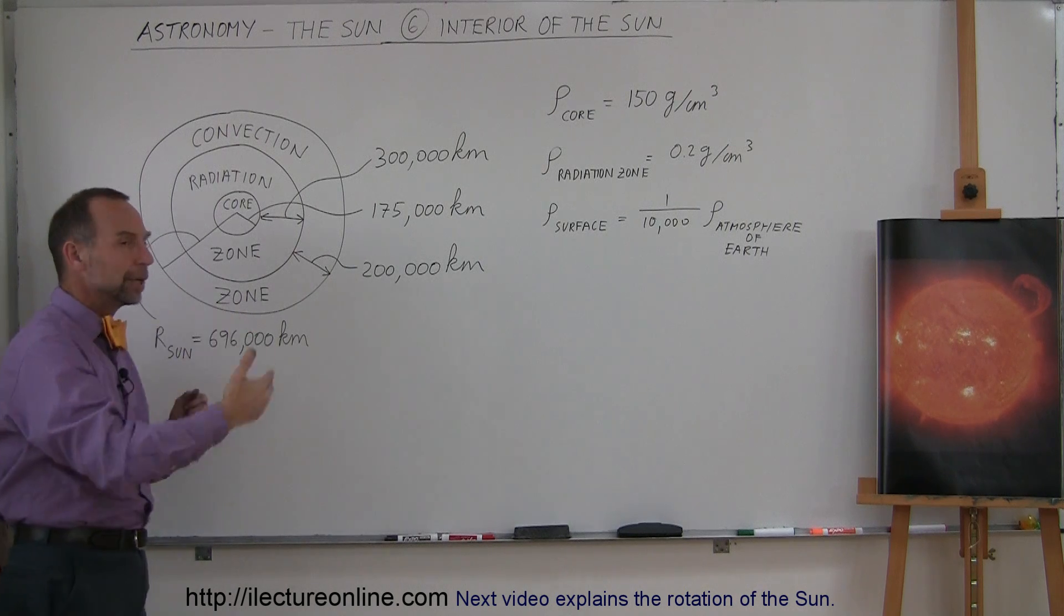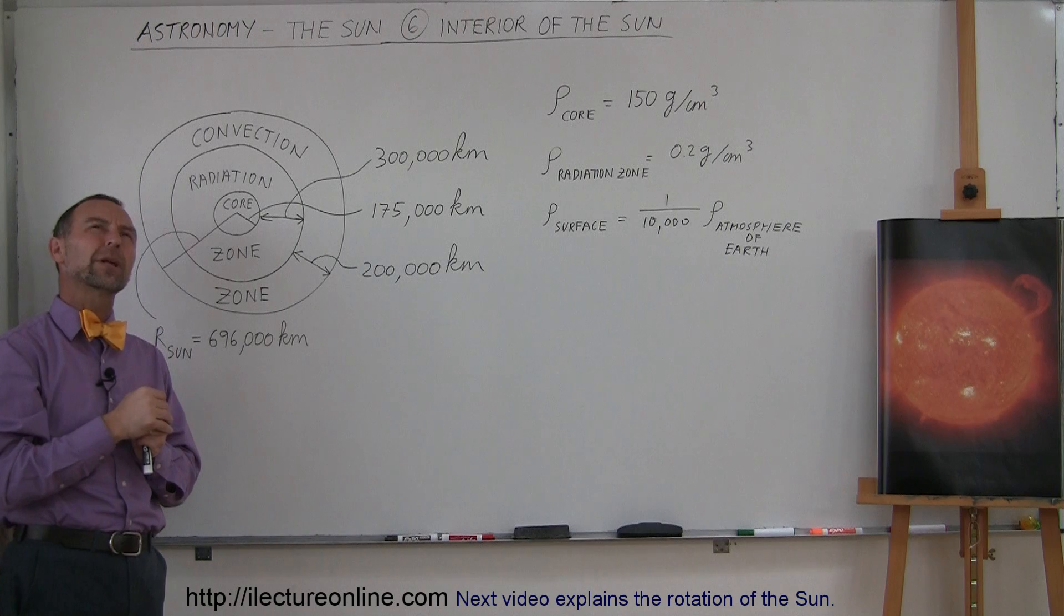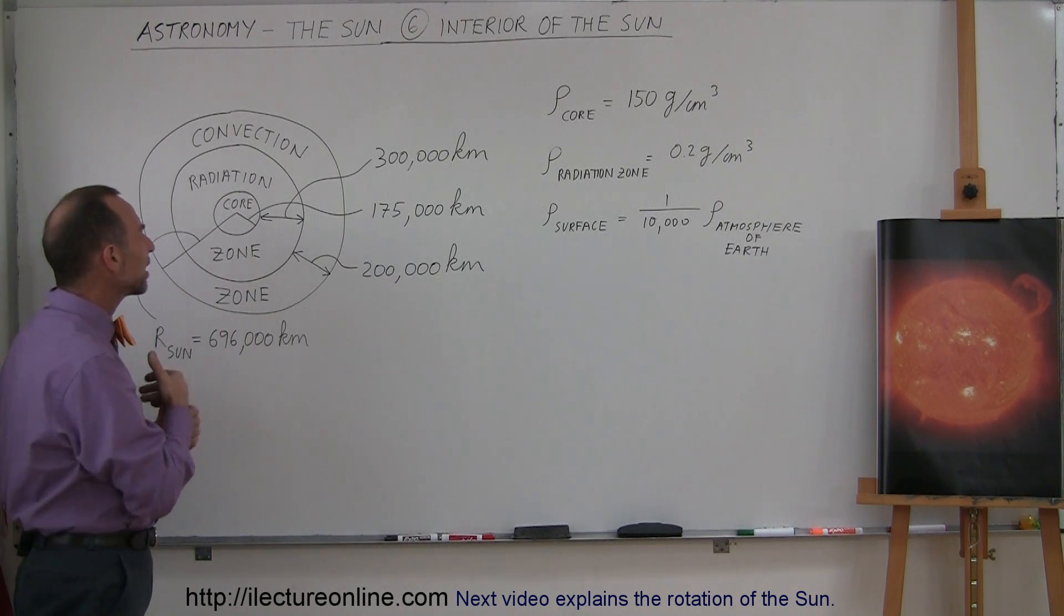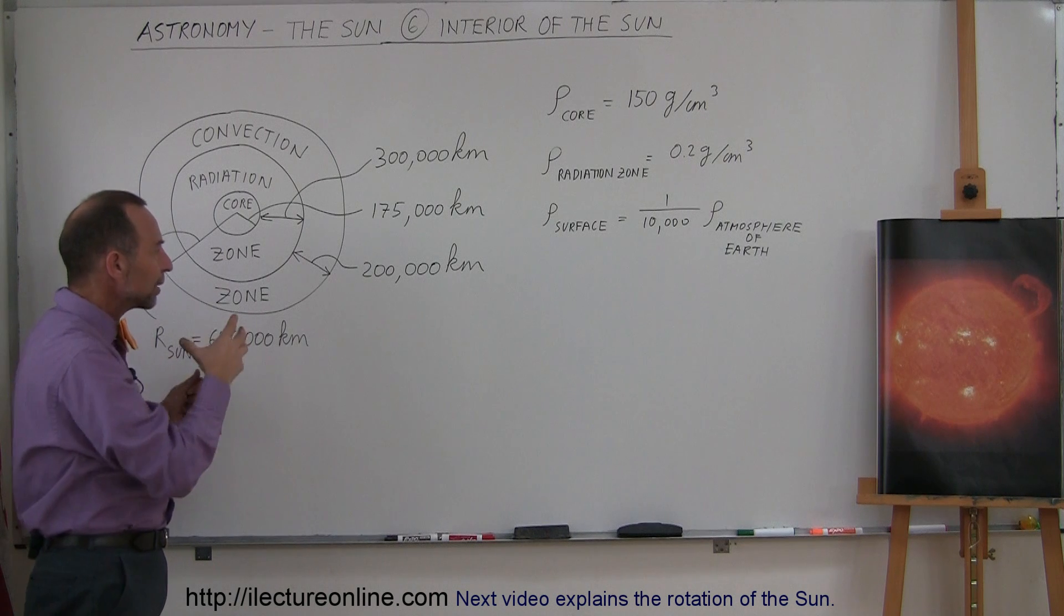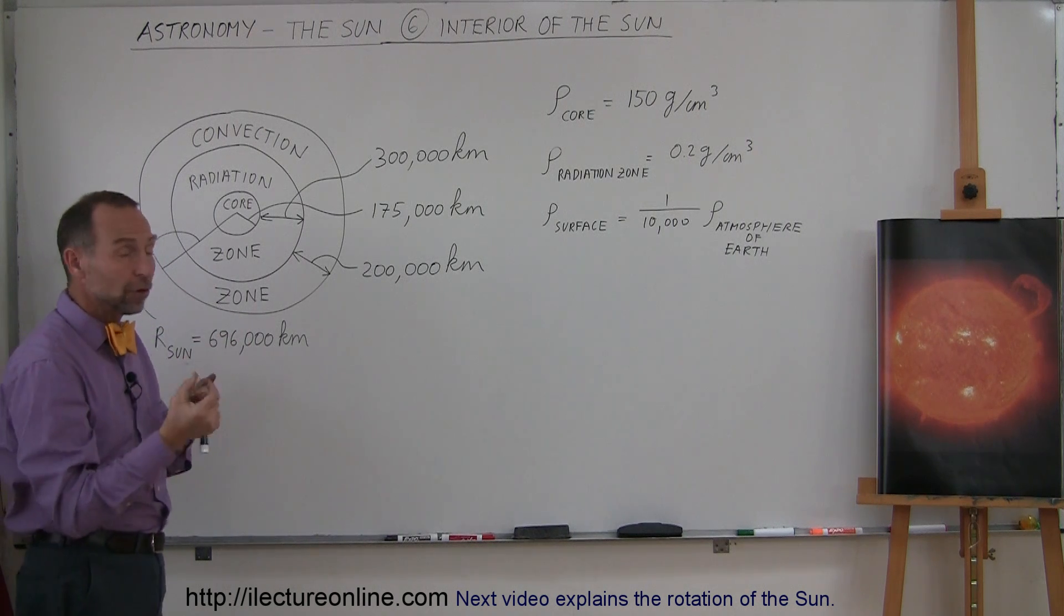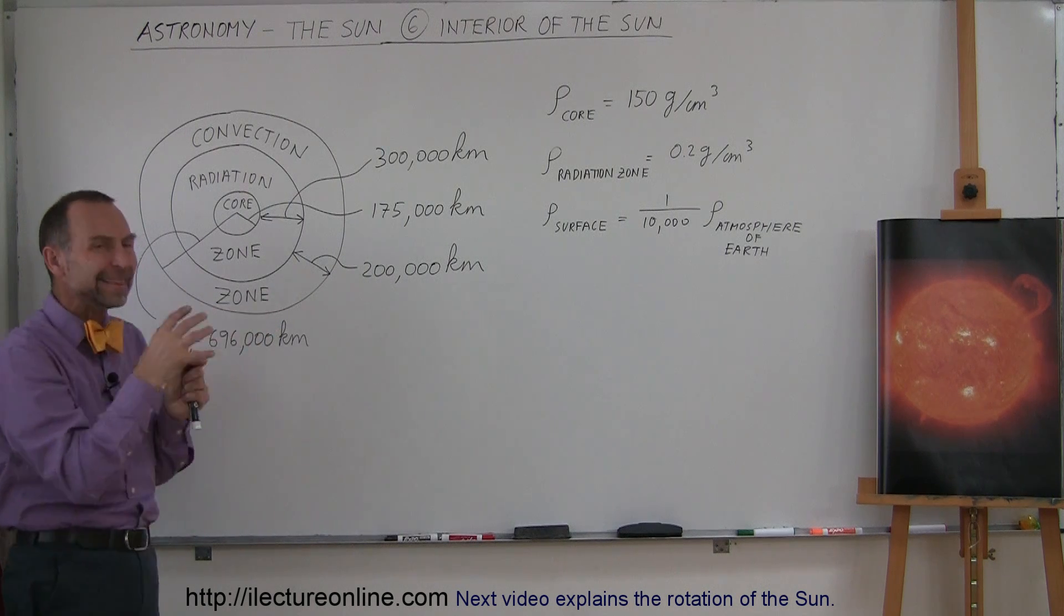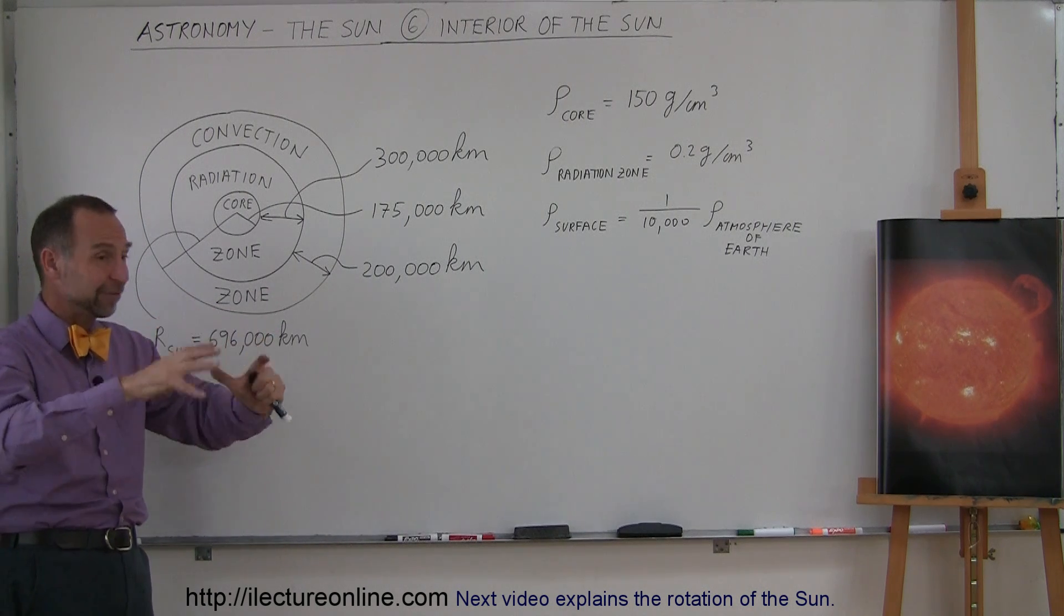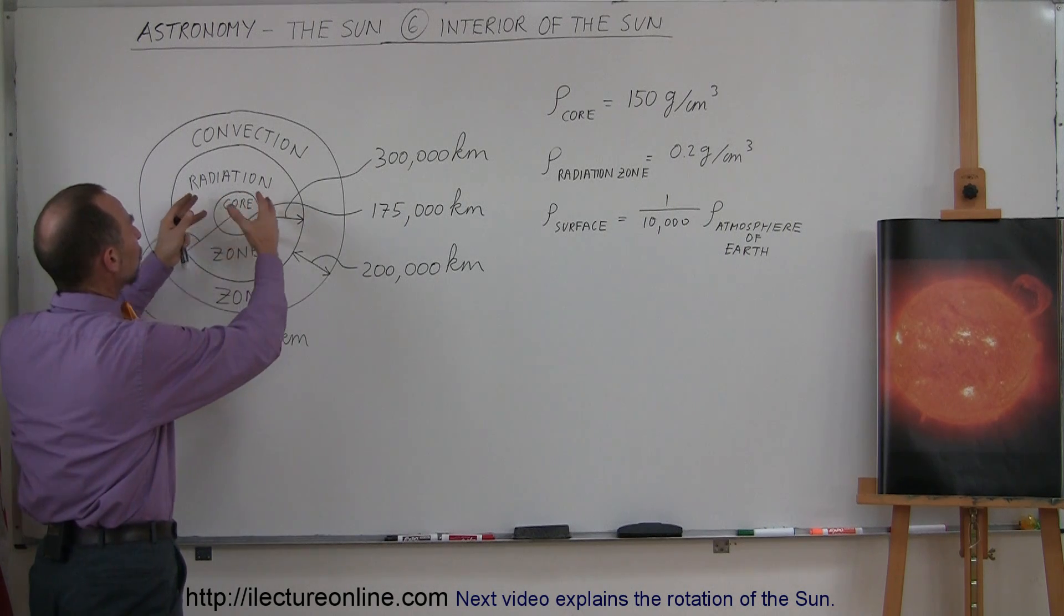It's converting hydrogen to helium at a rate of about 600 billion kilograms of hydrogen every single second. The mass defect, the amount of mass that's directly converted to energy, is about 9 billion pounds of mass every second. And that energy slowly works its way out of the Sun.